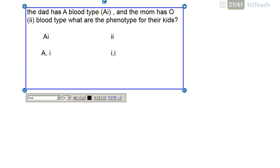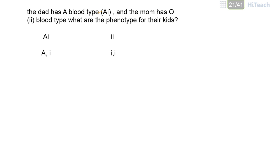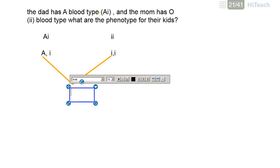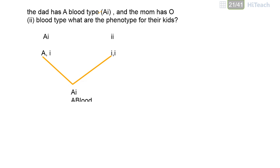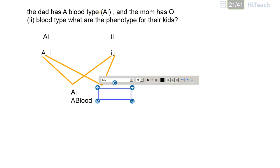For the first kid, he can get I^A from his dad and i from his mom, so the genotype is I^A i — the phenotype is blood type A. For the second kid, he also receives I^A from his dad and i from his mom, so the genotype is I^A i — also blood type A. So far two kids have phenotype A.